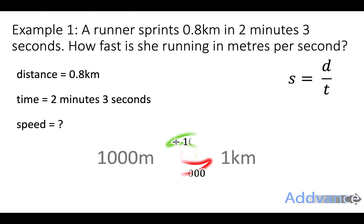So the distance is 0.8 kilometers. So we go from kilometers to meters, we're going to times by a thousand. 0.8 times a thousand on your calculator is 800 meters.